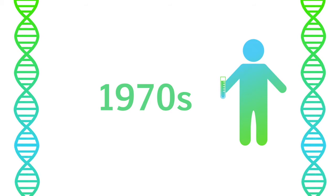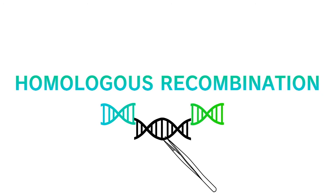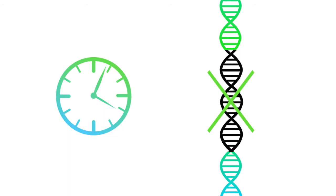Genome editing originated in the 1970s, when scientists began using a technique called homologous recombination to edit the genome of living cells. Although groundbreaking, this technique was inefficient and success rates were frustratingly low. As time went on, scientists developed new techniques.